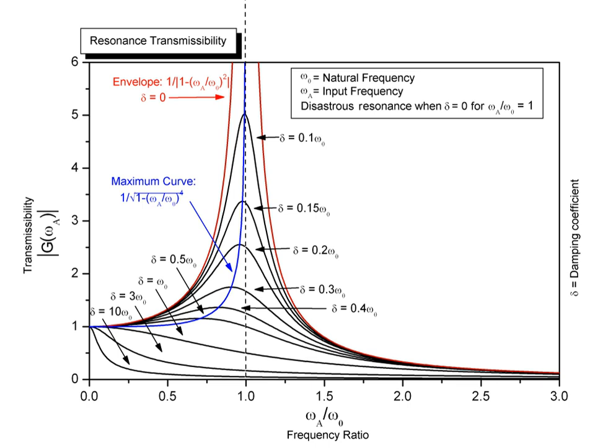Thus, a high Q-tuned circuit in a radio receiver would be more difficult to tune but would have greater selectivity. It would do a better job of filtering out signals from other stations that lie nearby on the spectrum. High Q oscillators operate over a smaller range of frequencies and are more stable. The quality factor of oscillators varies substantially from system to system. Systems for which damping is important, such as dampers keeping a door from slamming shut, have low Q. Clocks, lasers, and other systems that need either strong resonance or high-frequency stability need high-quality factors.